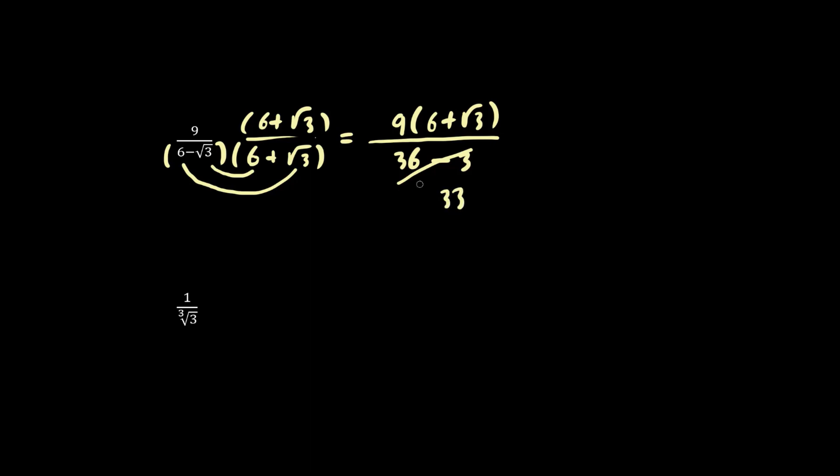We can divide top and bottom by 3, so we have 3, 6 plus root 3 over 11. This is an acceptable answer, or we can use distribution as well. This is equivalent to 18 plus 3 root 3 over 11.